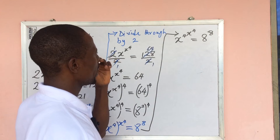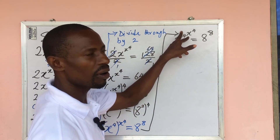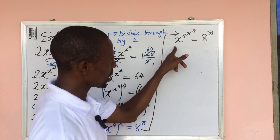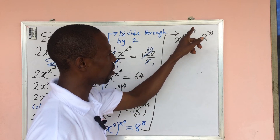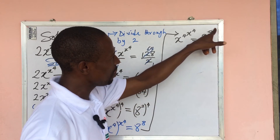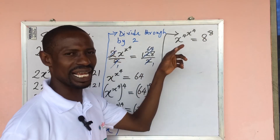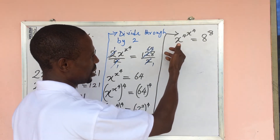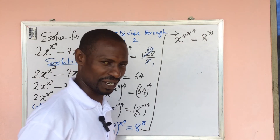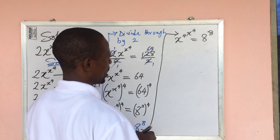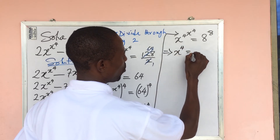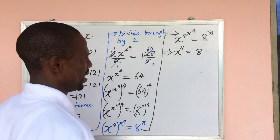So we are now having x to the power of 4, all to the power of x to the power of 4, equal to 8 to the power of 8. Something special has happened here — the power and the base are the same on both sides. So we can equate the base: x to the power of 4 equals 8.